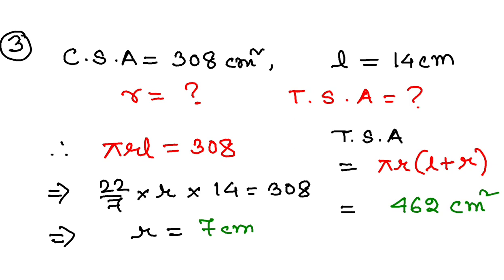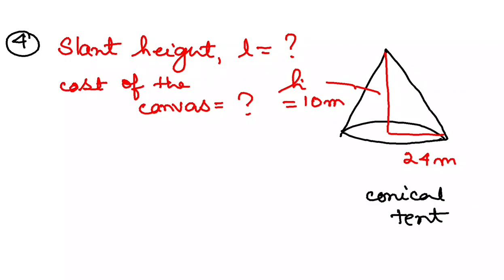Now let's move on to question number 4. Question number 4 is very important. In this question they are talking about a conical tent. The tent is conical in shape with height 10 meters and radius 24 meters. You have to find the slant height of the tent. The tent is made of canvas, so you have to find the area of canvas and the cost of the canvas.